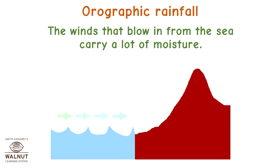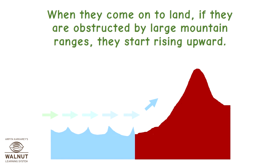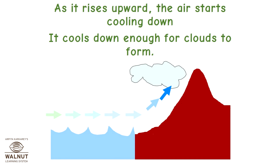Orographic Rainfall. The winds that blow in from the sea carry a lot of moisture. When they come on to land, if they are obstructed by large mountain ranges, they start rising upward. As the air rises upward, it starts cooling down, cooling enough for clouds to form.